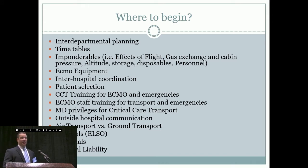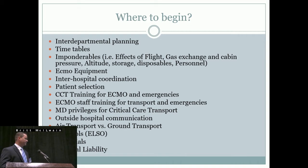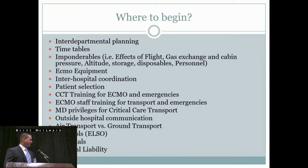Medical privileges for critical care transport seem to be the Achilles heel of the program — it takes the longest. More specifically, cannulation privileges at outside hospitals are the biggest challenge. Outside hospital communication is also critical — they need to know what you need when you arrive and how to support you once you're there. We also looked at air versus ground transport differences, protocols, financials, and liability for the hospital.